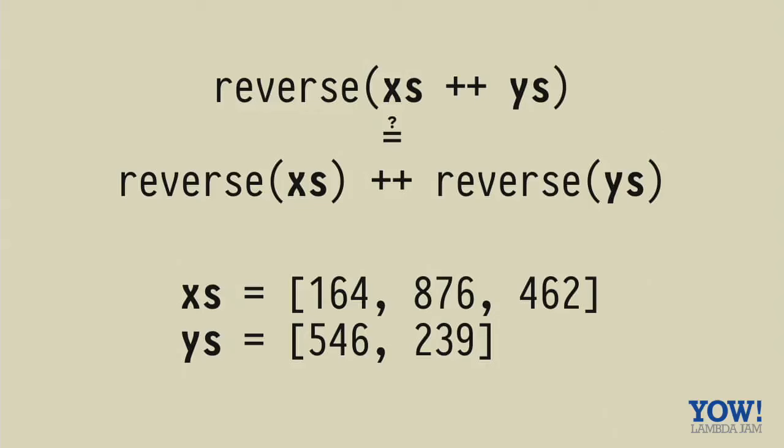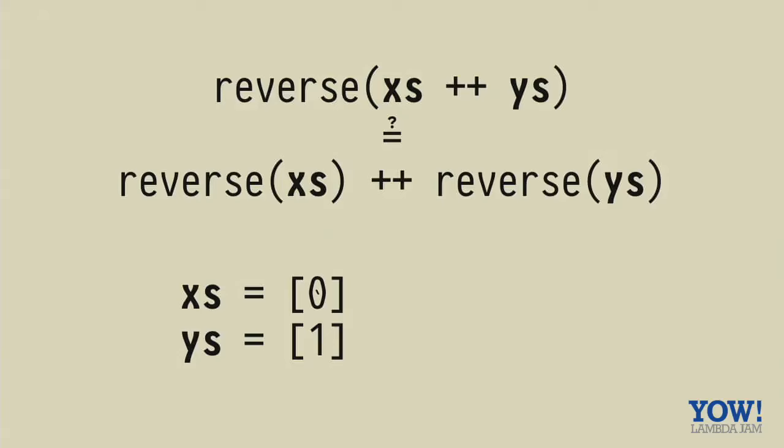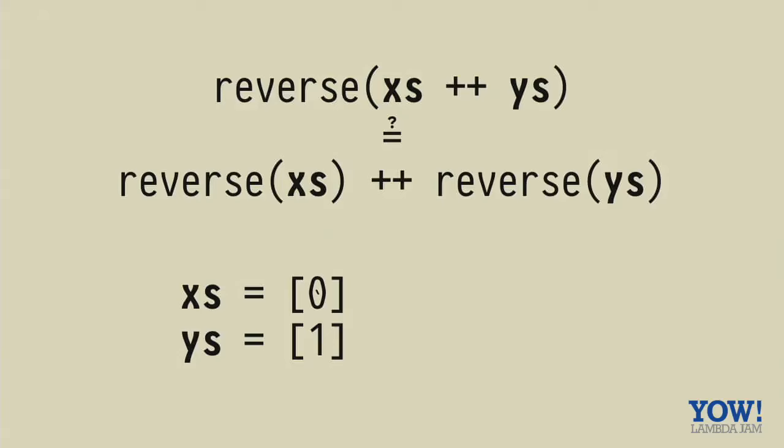So, what it would do instead is shrink this counter example to a minimal one. If we substitute that into our equation, then we'll see that this is obviously not true because if we reverse a singleton list with zero and reverse a singleton list one, that's just going to give us zero and one when we add them together. And the one at the top will give you one and zero. So, that's obviously not true.